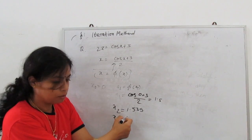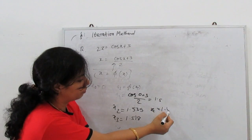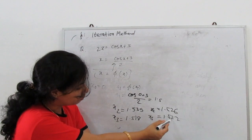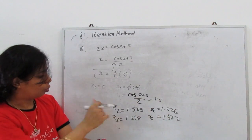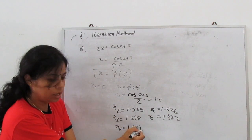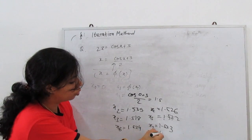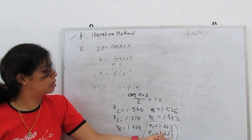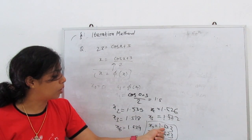x₃ gives 1.158, x₄ = 1.526, x₅ = 1.522 — two decimal places are becoming fixed. We continue: x₆ = 1.524, x₇ = 1.523, x₈ = 1.523. The root repeats, so we stop the iteration here. The solution — one root of the given equation — is 1.523.